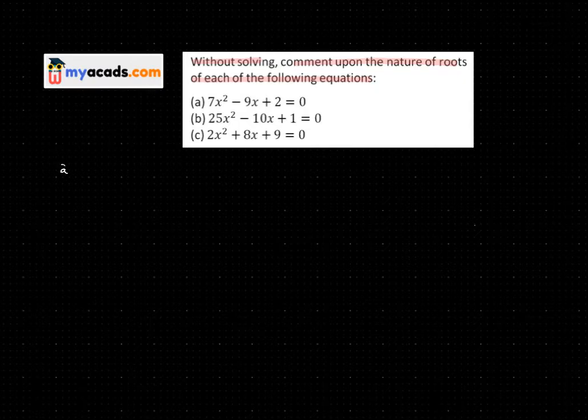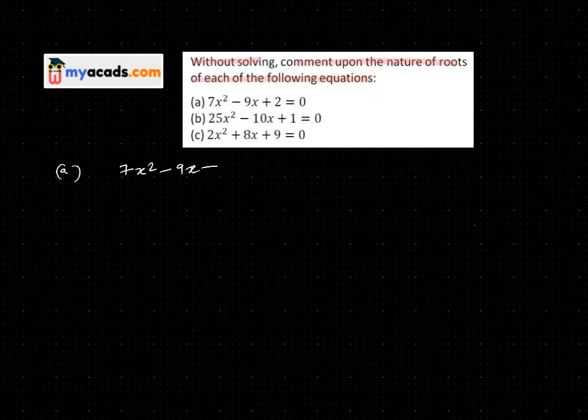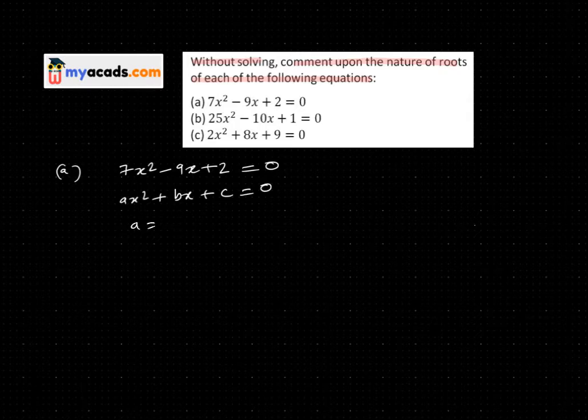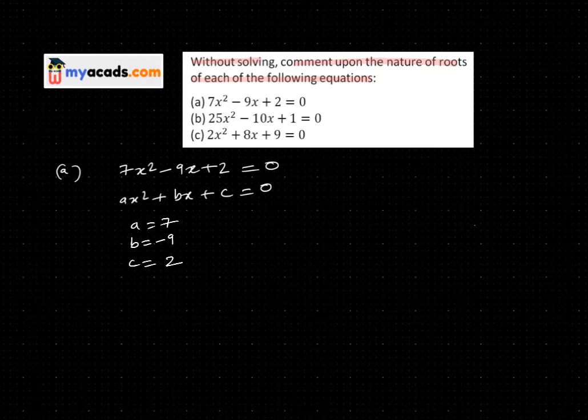So my first question is 7x² - 9x + 2 = 0. Now I compare this to the standard form of quadratic equation: ax² + bx + c = 0. So a becomes 7, b becomes -9, and c becomes 2.